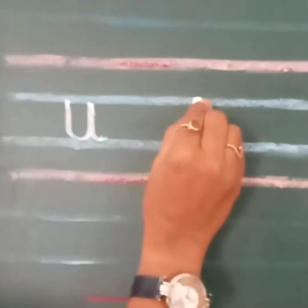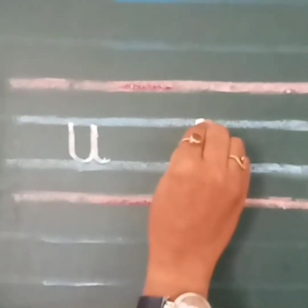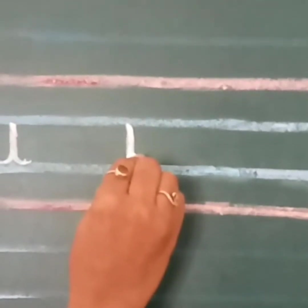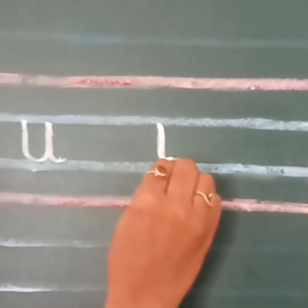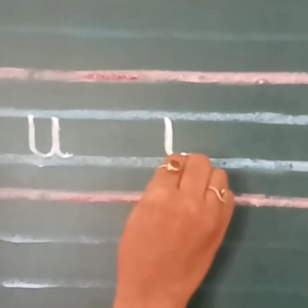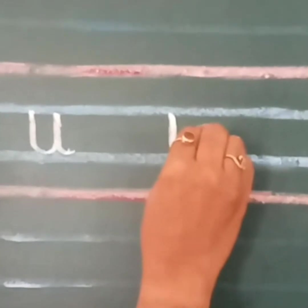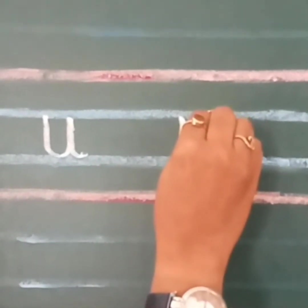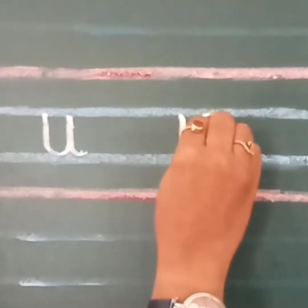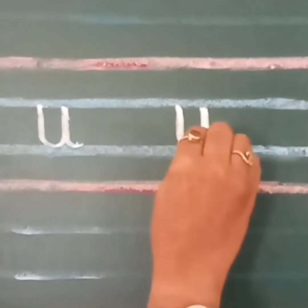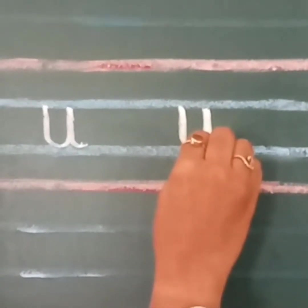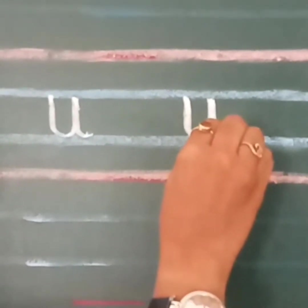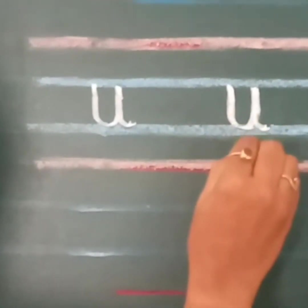One more time. First blue line to second blue line, standing line. Touch the second blue line and make a curve. Go up. Touch the first blue line. Come down on the same line. Touch the second blue line and make a curve. Script letter U.